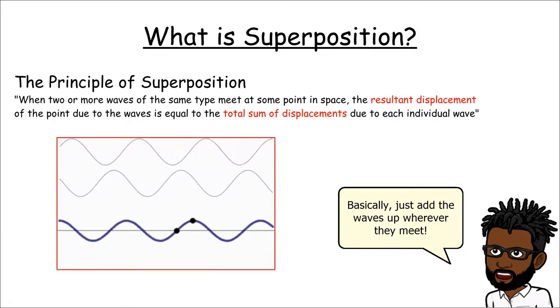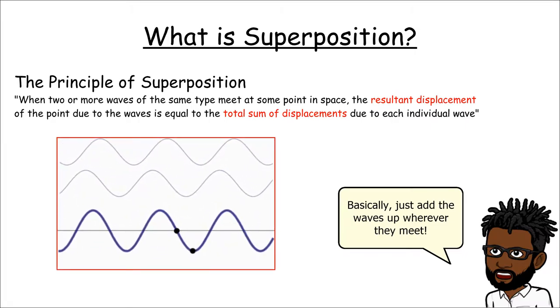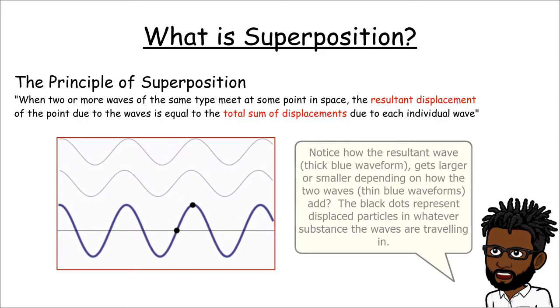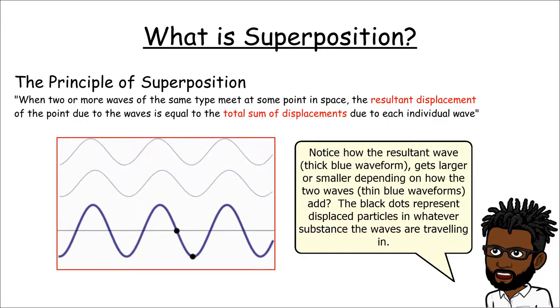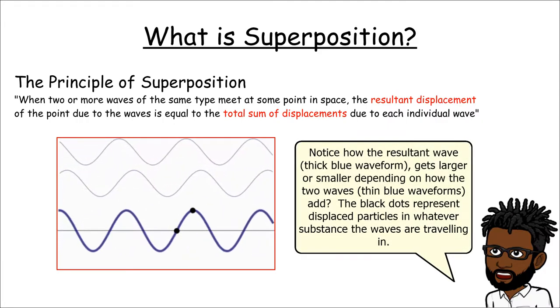Notice the moving image. We get successive constructive and destructive superpositions based upon how the two waves are lined up, whether they are peak to peak, trough to trough.